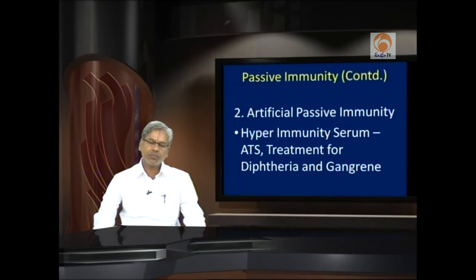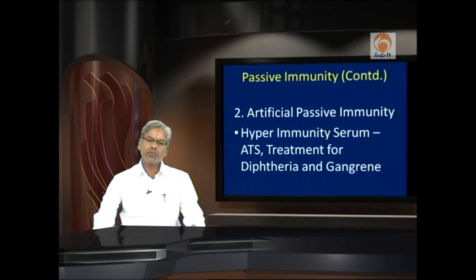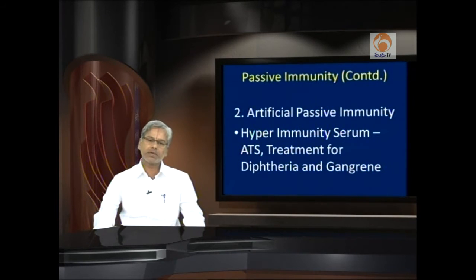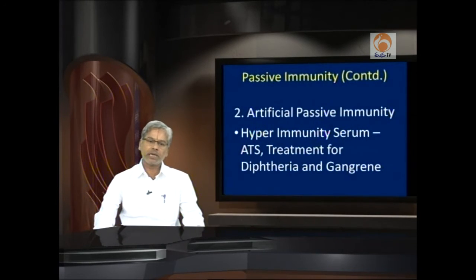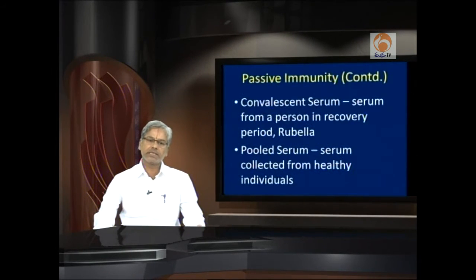Artificial passive immunity is by taking in sera of different types. One is hyperimmunity serum: we utilize animals like horse or pig, inject the pathogen, develop serum there, collect it, and use it for our purposes. ATS is the common hyperimmunity serum employed on many occasions. Treatment for diphtheria and gangrene also employs hyperimmunity serum.